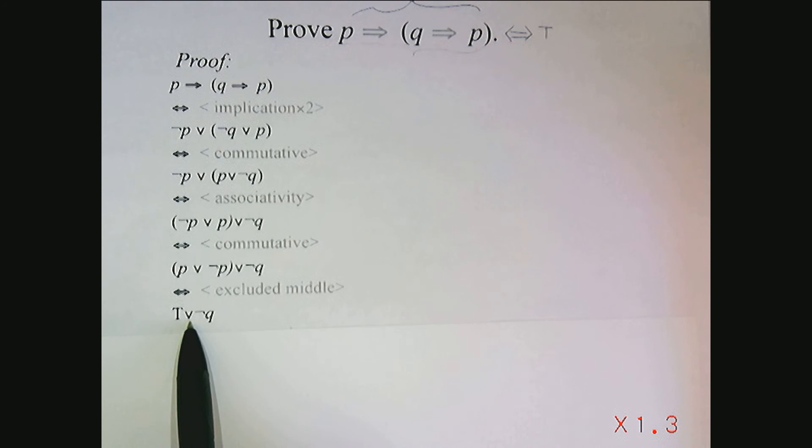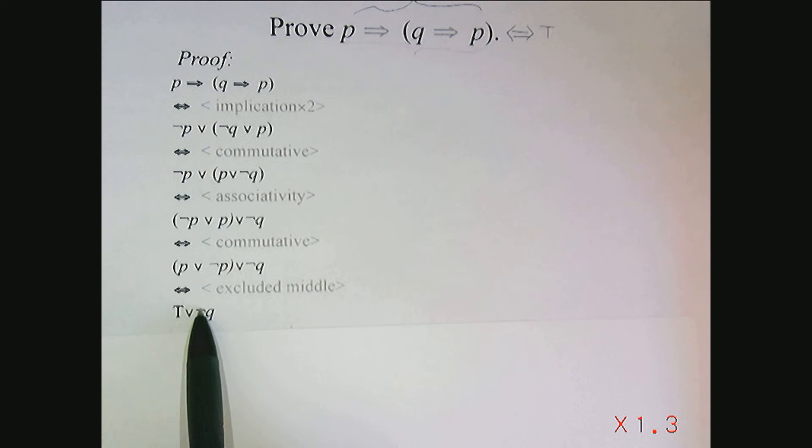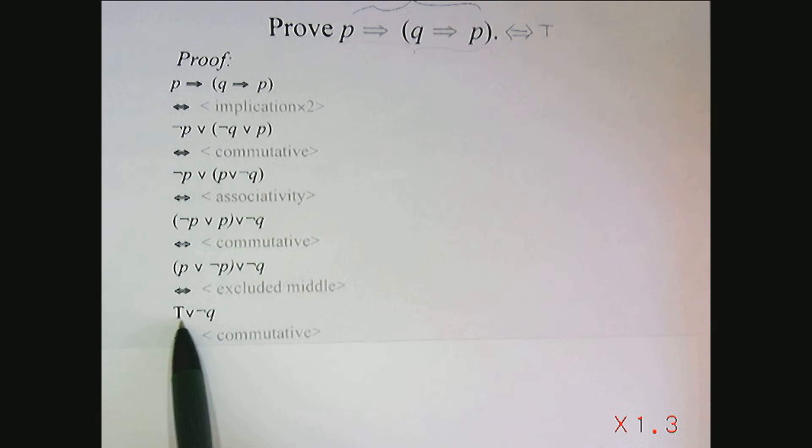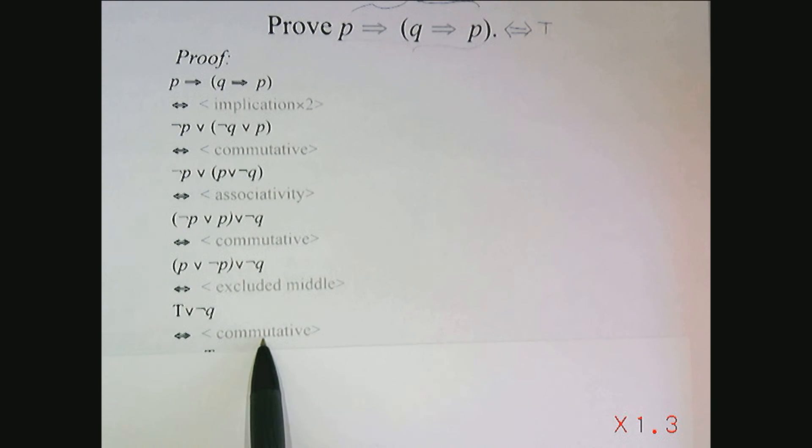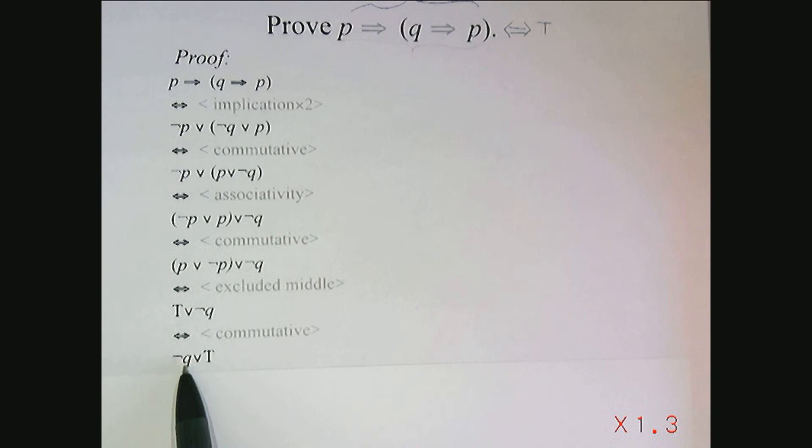Well, I could use or simplification, but or simplification is about an expression or true. So it's not in the right order. But I can, again, rearrange and write this by the commutative property as not Q or true. And not Q or true is true.